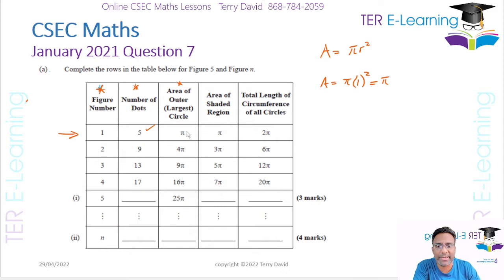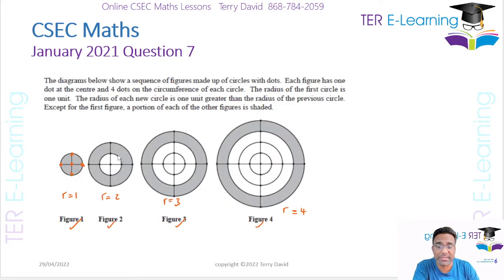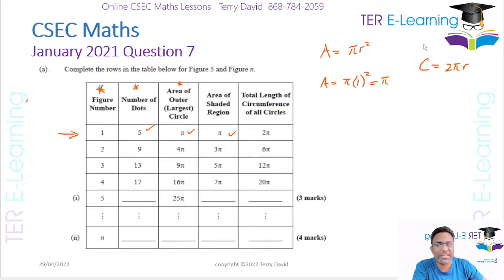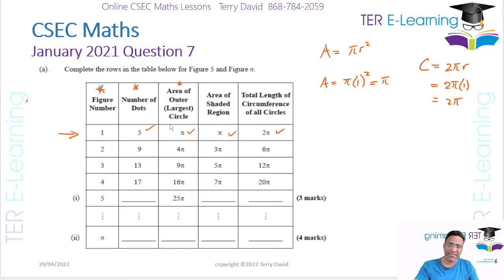The area of the first circle is π × 1² = π. The area of the shaded region in figure one — the entire circle is shaded — so that area is still π. The total circumference of all circles is given by 2πr. For the first circle with radius one, that gives 2π × 1 = 2π.